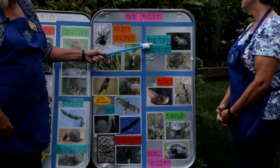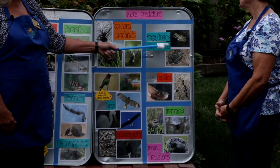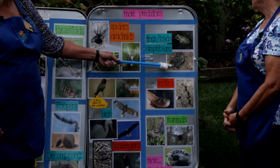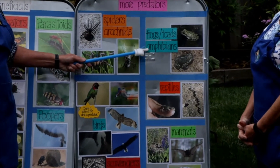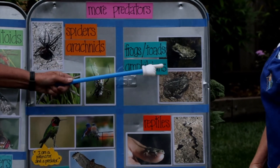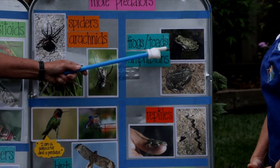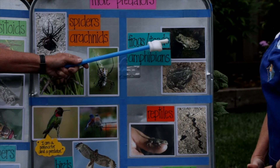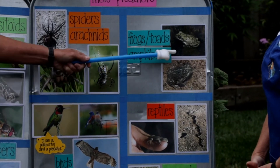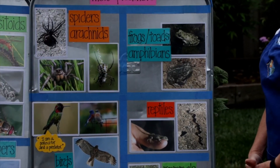The next category is frogs and toads — here's a frog at the top and a toad at the bottom. The fancy word is amphibians. Frogs and toads especially love slugs and snails, which are real garden pests for everybody. Along with that, they eat many harmful insects.